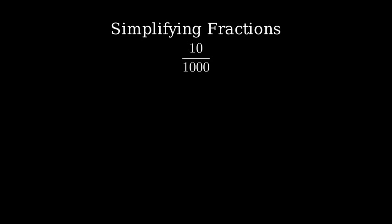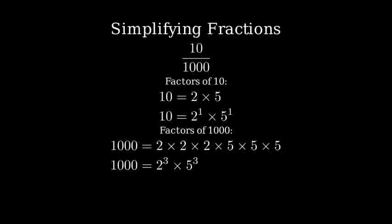Let's start by finding the factors of ten. Ten equals two times five. Now let's find the factors of one thousand. One thousand equals two to the third power times five to the third power.